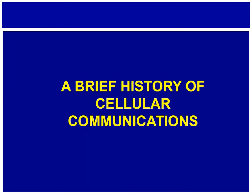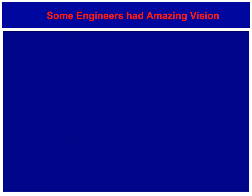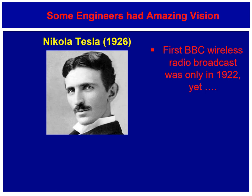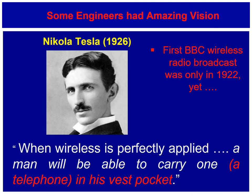To put 5G and IoT, Internet of Things, into historical context, I really need to look at the origins of cellular communications. Some engineers had amazing vision. You've probably heard of the company Tesla, but did you know it came from Nikola Tesla, who was a Serbian engineer? In 1926, only four years after the first BBC wireless radio broadcast, he was predicting that cellular phones which you could fit in your pocket would exist — about 73 years before they actually happened.